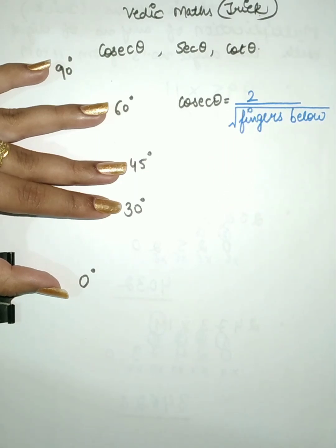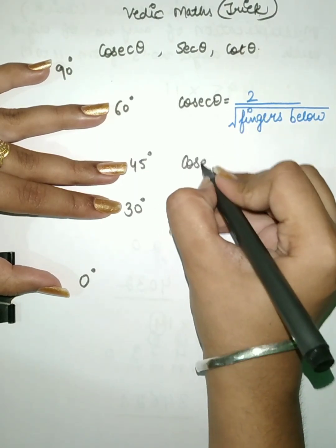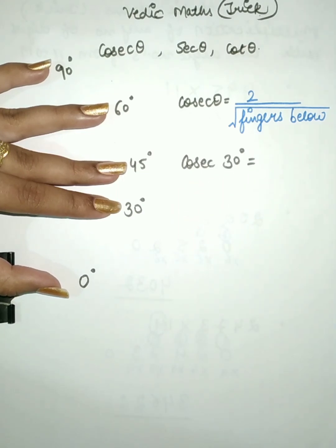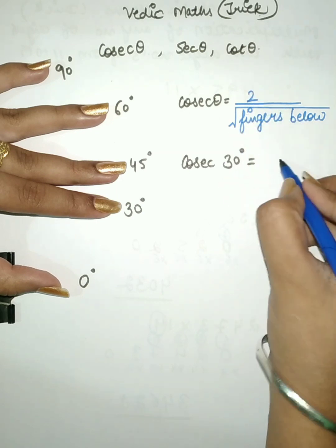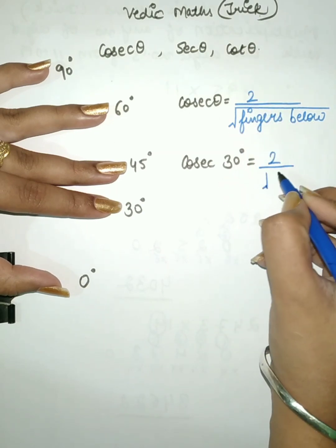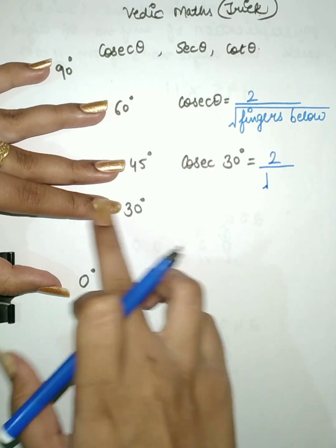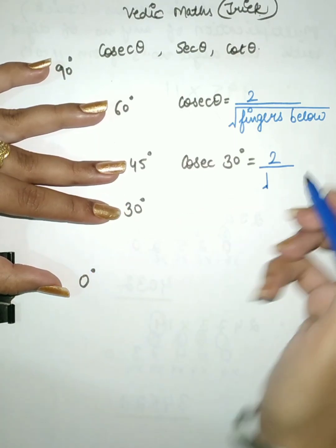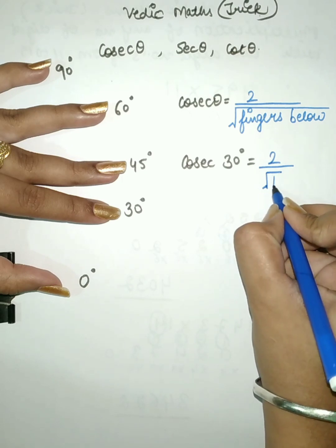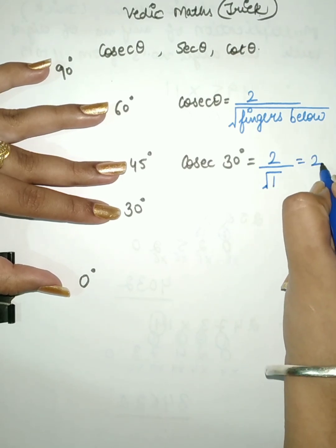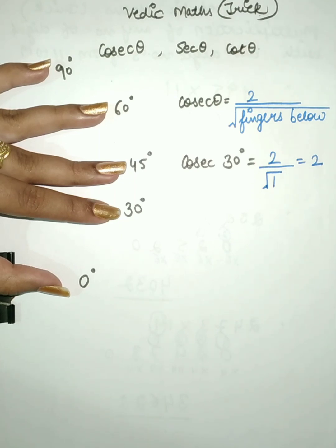Now we have to find the value of cosecant 30 degree. In cosecant 30 degree, we write 2 divided by the root of fingers below. 30 degree is this finger, and below this finger there is only 1 finger. So we take the root of 1, which is 1. So we get 2 divided by 1, and cosecant 30 degree will be equal to 2.